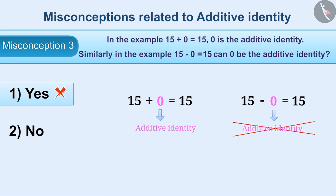With this understanding, option 1 is chosen as an answer, which is incorrect. The correct way of understanding is that additive identity is related to the addition of any number with 0 — it is not related to subtraction. Therefore, the correct answer is option 2, which is no.